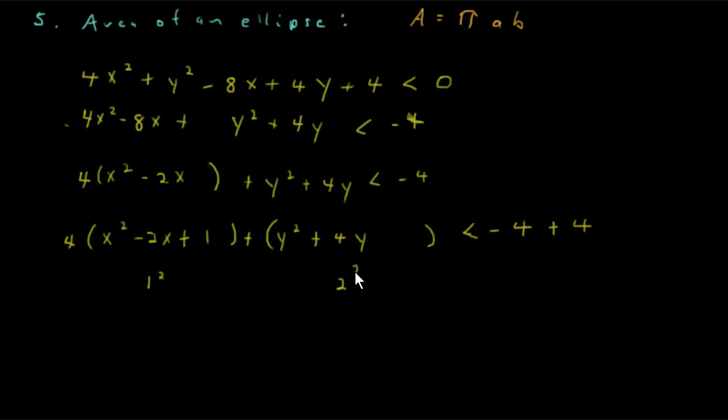To do completing the square with the y's, we'll take half of the 4 there, which is 2, square it, which is 4. So we need to add another 4.